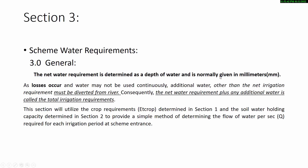In general, the net water requirement is determined as a depth of water and is normally given in millimeters. As losses occur and water may not be used continuously, additional water other than the net irrigation requirement must be diverted from the river. Consequently, the net water requirement plus any additional water is called the total irrigation requirements. This section will utilize the crop requirements from section one and the soil water holding capacity from section two.